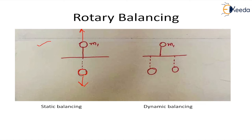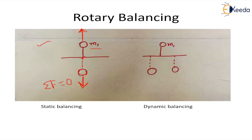In the first case, mass m1's center of mass is not lying on the axis of rotation and it is producing an unbalanced force. To balance this, we place a counter mass at the same plane such that the centrifugal force produced by this new mass balances the original unbalanced force, making the resultant force on the body zero. This type of balancing is known as static balancing, where we balance only the unbalanced forces.